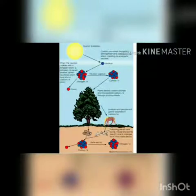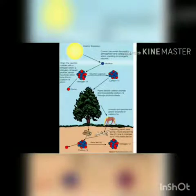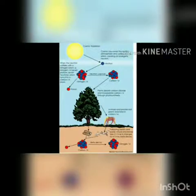Cosmic rays enter the earth's atmosphere in large numbers every day. For example, every person is hit by about half a million cosmic rays every hour. It is not uncommon for a cosmic ray to collide with an atom in the atmosphere, creating a secondary cosmic ray in the form of an energetic neutron.